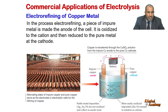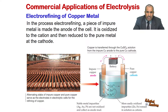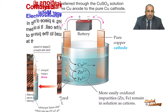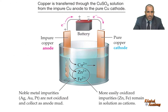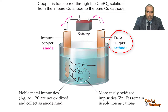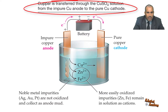Another commercial application of electrolysis is electro refining and electroplating. The purification of a metal by means of electrolysis is called electro refining. For example, impure copper obtained from ores is converted to pure copper in an electrolytic cell that has impure copper as the anode and pure copper as the cathode. The electrolyte is an aqueous solution of copper sulfate.